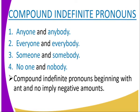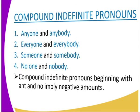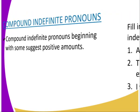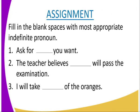Similarly: everyone and everybody; someone and somebody; no one and nobody. Compound indefinite pronouns beginning with 'any' and 'no' imply negative amounts. Those beginning with 'some' suggest positive amounts.